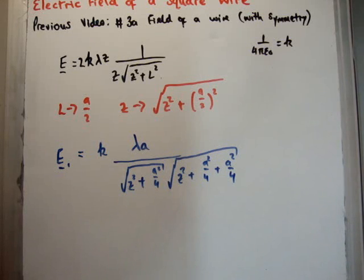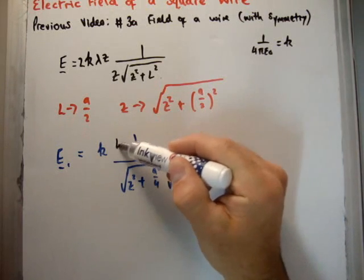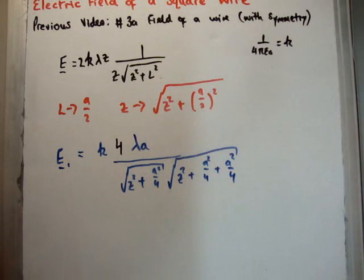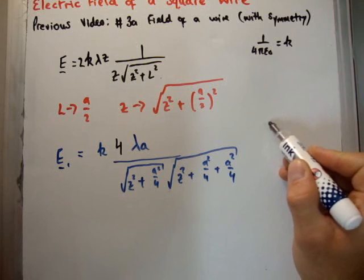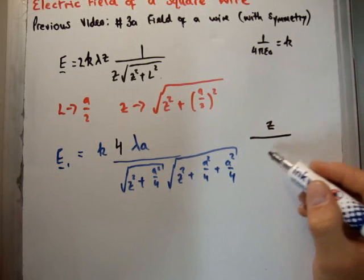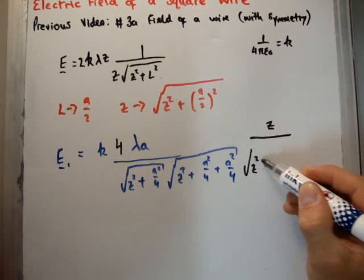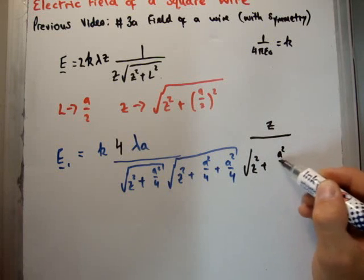So in order to get the field for four wires, of course, we need to multiply by four. But we also need to account for the fact that it's got this y component. It's no longer just got an x component. So we have to, once again, multiply by cosine theta, which was z over the square root of z squared plus a squared over four.